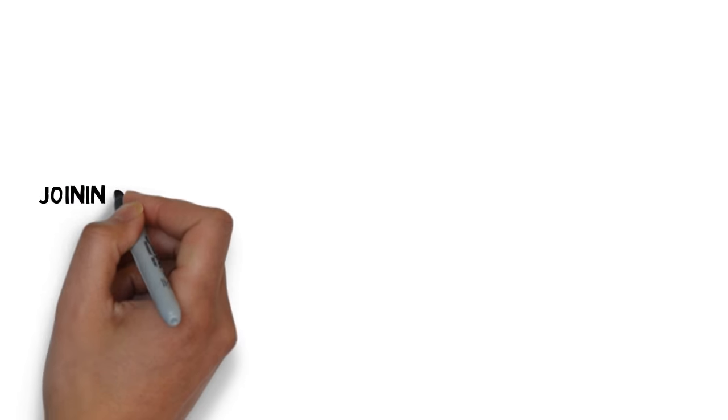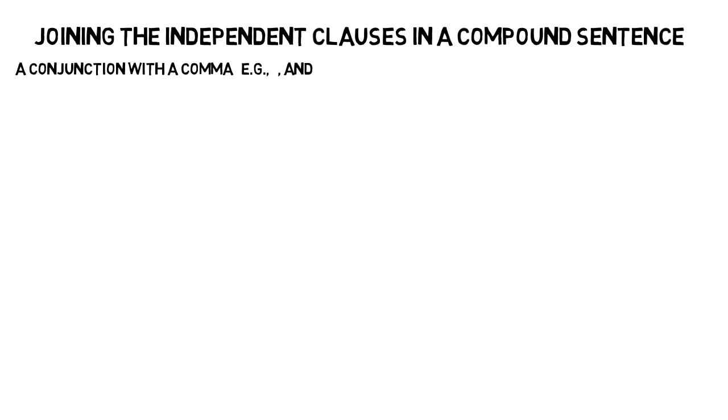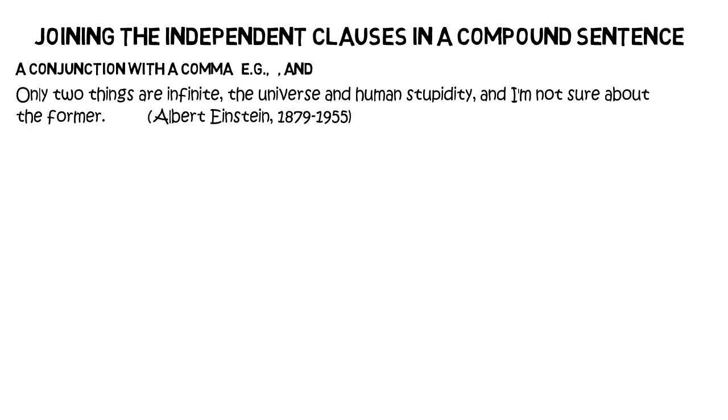So let's go through the different ways that the independent clauses in a compound sentence can be joined. Here's the method we've covered already. The conjunction and a comma. There's a slightly more complicated example. Only two things are infinite, the universe and human stupidity. That could be a sentence. And I'm not sure about the former. That could also be a sentence. So what we have there is a compound sentence. The independent clauses of which are joined with a conjunction and a comma.